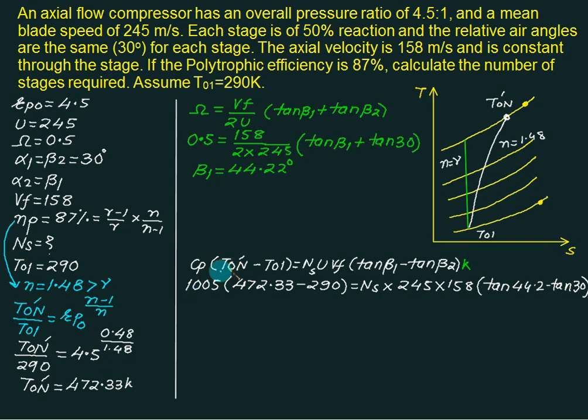Put Cp equal to 1005, T0n dash equal to 472, T01 equals to 290. Number of stages we do not know, u is equal to 245, Vf equals to 158, tan beta 1 is 44.2, beta 2 is equal to 30. We can solve for number of stages. Number of stages comes out to be 11.98, approximately equal to 12 stages.